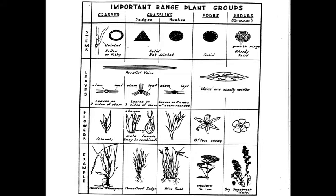The only grass-like plant that we're going to worry about in 102 are the sedges. They have triangular shaped stems, or sedges have edges. The leaves have parallel veins, they come off in groups of three, and the flowers are usually small and inconspicuous.